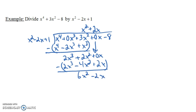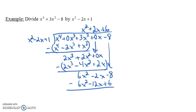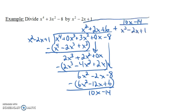We have a minus 2x here — 0x minus 2x. We bring down the minus 8. What times x squared gives us 6x squared? It's just 6. So 6 times x squared minus 2x plus 1 is 6x squared minus 12x plus 6. When we subtract, we end up with 10x because negative 2x plus 12x, and then negative 8 minus 6 is minus 14. Our remainder is not just a constant — it's 10x minus 14. So we put 10x minus 14 over x squared minus 2x plus 1. That's our answer when we divide this by this.